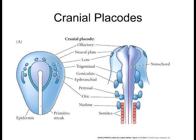The only placode that does not generate any neurons whatsoever is the lens placode. The lens placode is a group of cells that contributes to the formation of the lens of the eye, but does not form any of the neurons that are part of the retina, or that innervate the retina back to the optic nerve. So the lens placode is the only non-neurogenic placode. All these others become sensory neurons — that's their only fate.